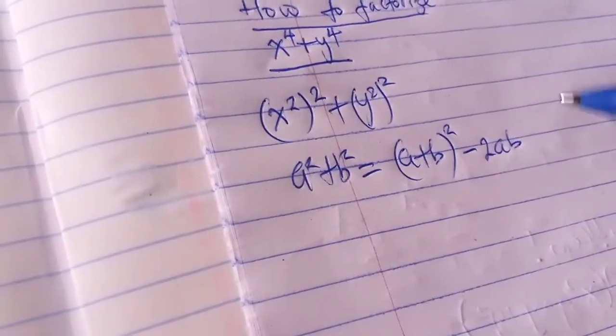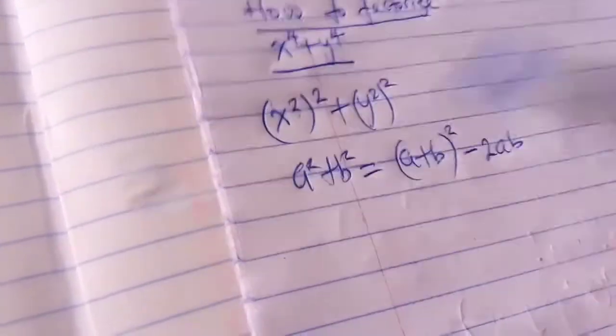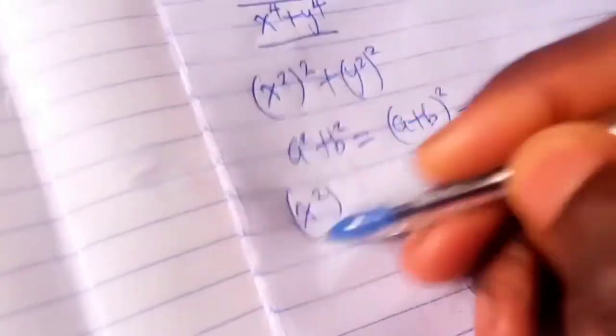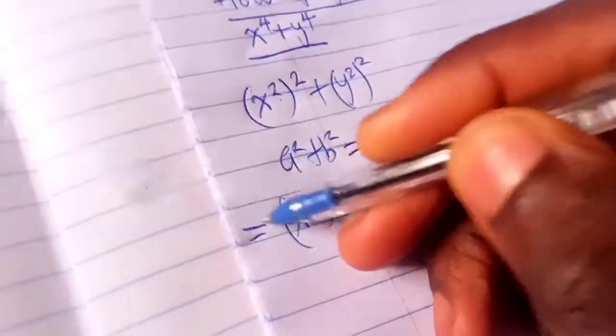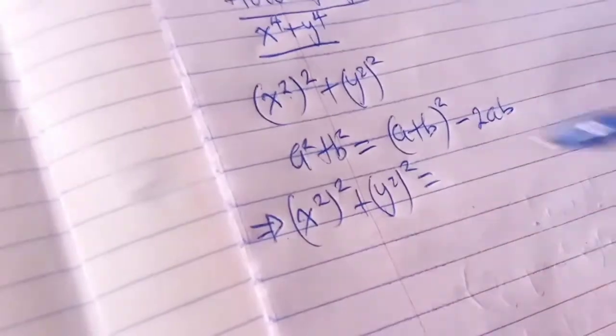So I'm just going to apply that right here. In place of the a, I'm going to be putting x squared because that's what we have. So this implies that x squared plus y squared is going to become...